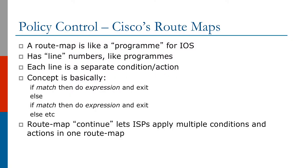We're going to look at the policy language used in different vendors. For Cisco, for policy control, if you want a complicated way to do this, you have what we call route maps. A route map is like a program for IOS — it has line numbers, much as old programming languages used to have, and each line with its line number is a separate condition or action.